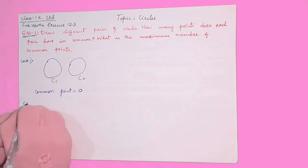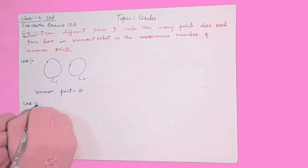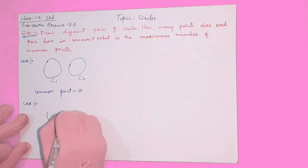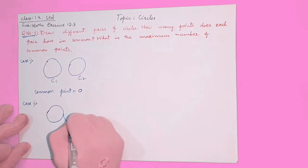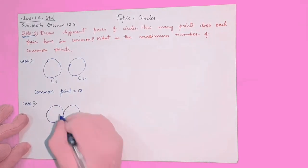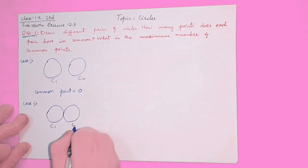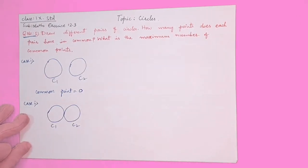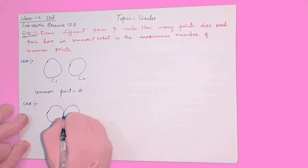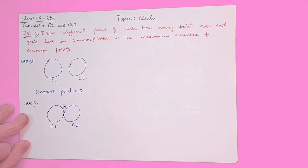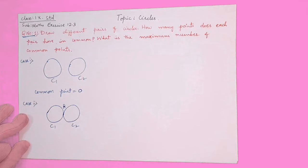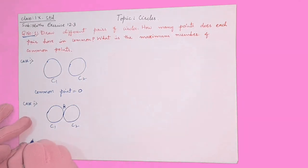If the circles are intersecting at one point — one circle and just beside it one more circle, C1 and C2 — they are having one common point, which we can name point A. So the number of common points equals one.